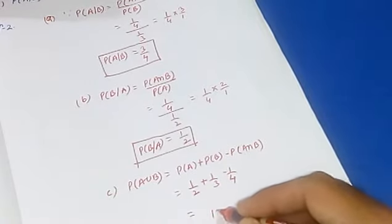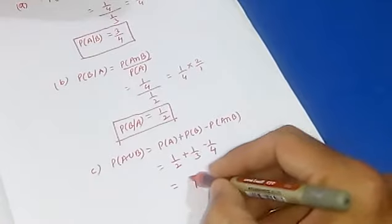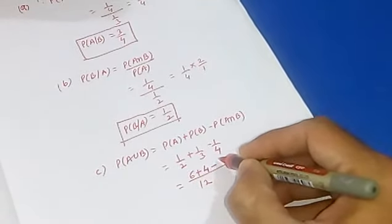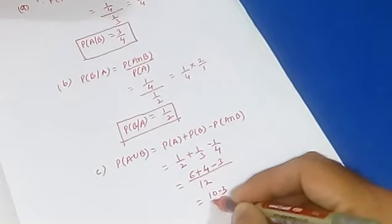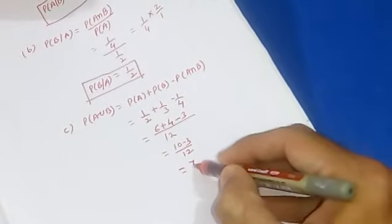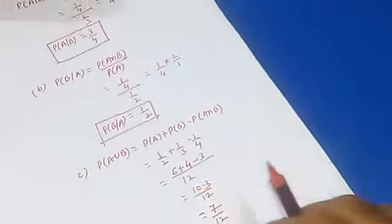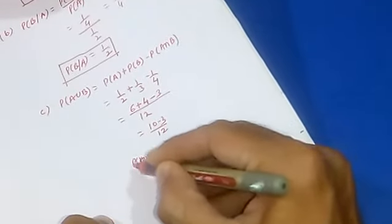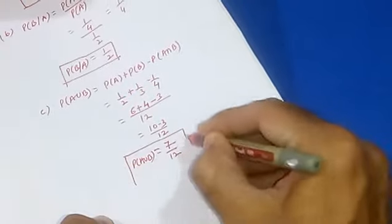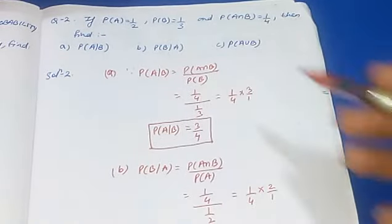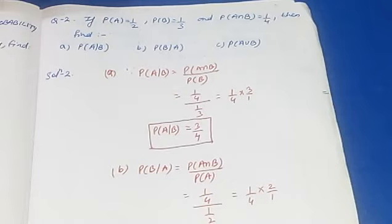Now we will solve this further. The LCM comes out to be 12. So we get 6 plus 4 minus 3, which is 10 minus 3 by 12, equal to 7 by 12. So our probability of A union B is equal to 7 by 12. From this sum we found: probability of A given B is 3 by 4, probability of B given A is 1 by 2, and probability of A union B is 7 by 12, which we have easily found from conditional probability.